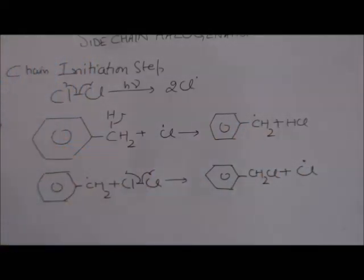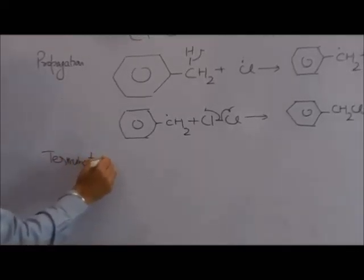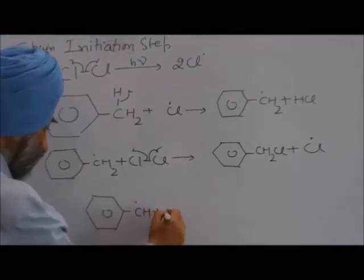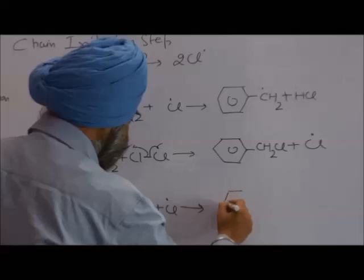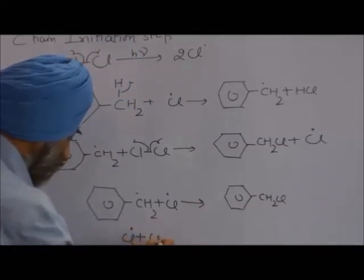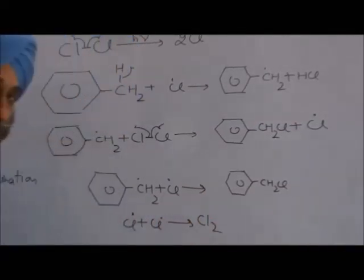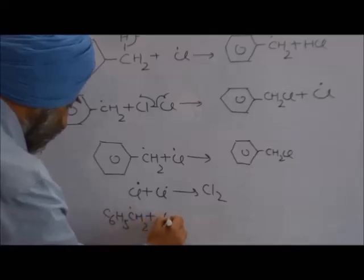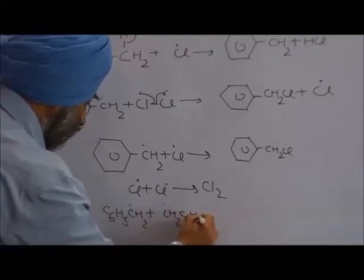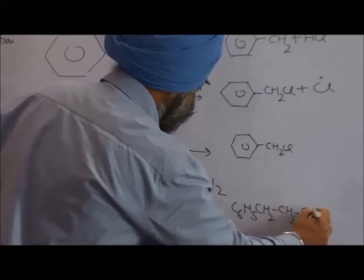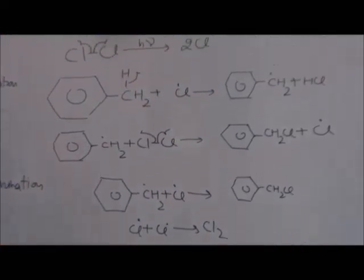Now what is the chain termination step? In the chain termination step, a free radical may combine with another free radical. For example, a benzyl free radical may combine with a chlorine free radical to generate a molecule of benzyl chloride. Or, benzyl free radicals may combine with each other to generate a dimer. So this is the overall mechanism of the reaction.